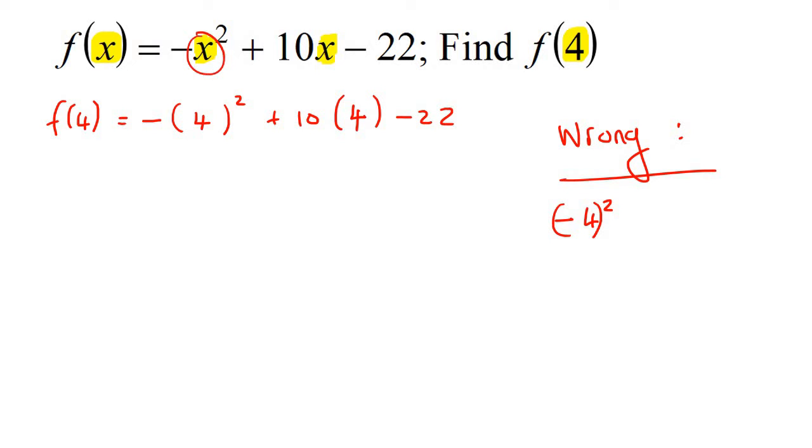See what I did there? Only replace the x's with a 4 because that's what they've asked us to do. And so this will become minus 16 plus 40 minus 22. And if you had to go work this out, you end up with 2. So f of 4 is 2.